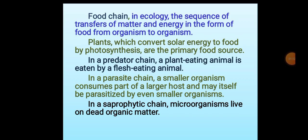Food chain, in ecology, is the sequence of transfers of matter and energy in the form of food from organism to organism. Plants, which convert solar energy to food by photosynthesis, are the primary food source. In a predator chain, a plant-eating animal is eaten by a flesh-eating animal. In a parasite chain, a smaller organism consumes part of a larger host and may itself be parasitized by even smaller organisms. In a saprophytic chain, microorganisms live on dead organic matter.